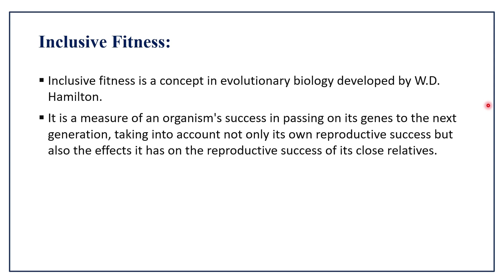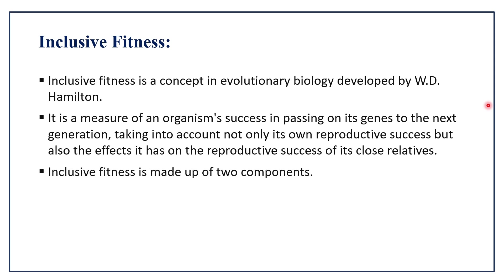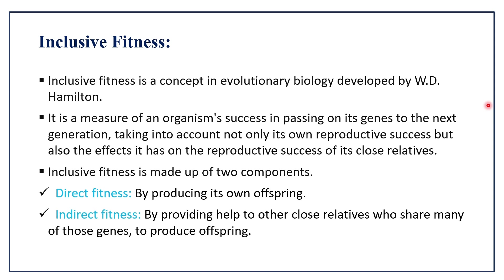By this point, we can see that altruism is not violating the natural selection theory. W.D. Hamilton says we must take into consideration the effect the trait has on the fitness of other individuals as well as the actor who performs the behavior. That is why inclusive fitness is made up of two components. One is direct fitness, by producing its own offspring, and another is indirect fitness, by providing help to other relatives who share many of those genes to produce offspring.